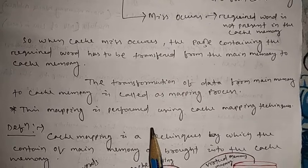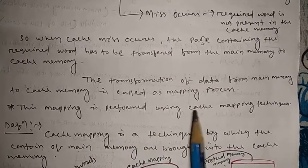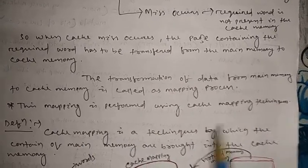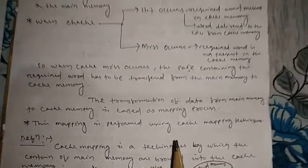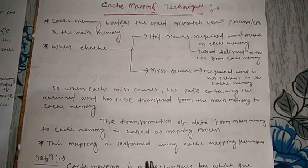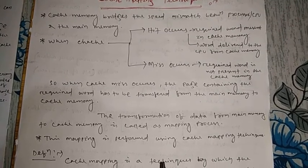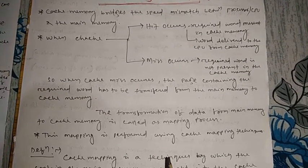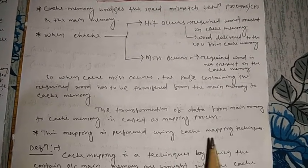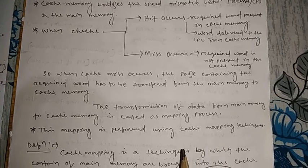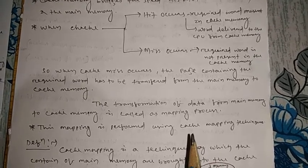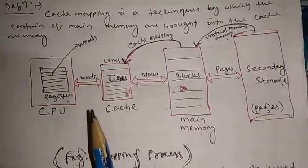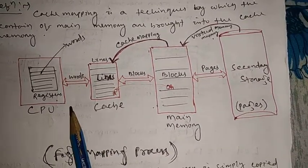So how is the mapping performed? The mapping is performed using cache mapping technique. Cache mapping technique is nothing but the transformation of data from main memory to cache memory — this is called the cache mapping process, and the technique by which this mapping is performed is called cache mapping technique.